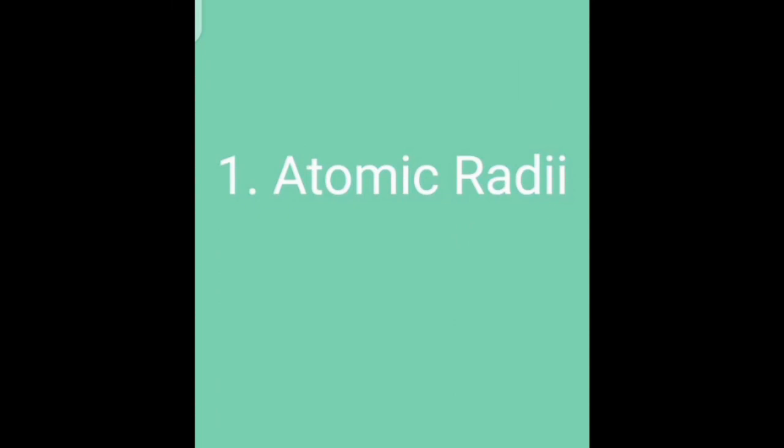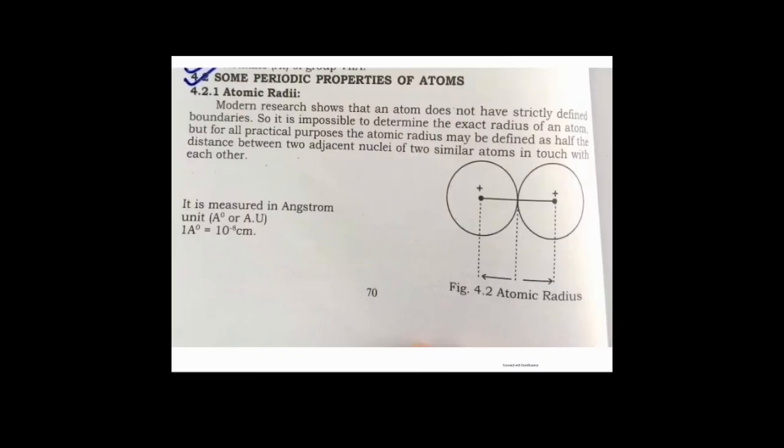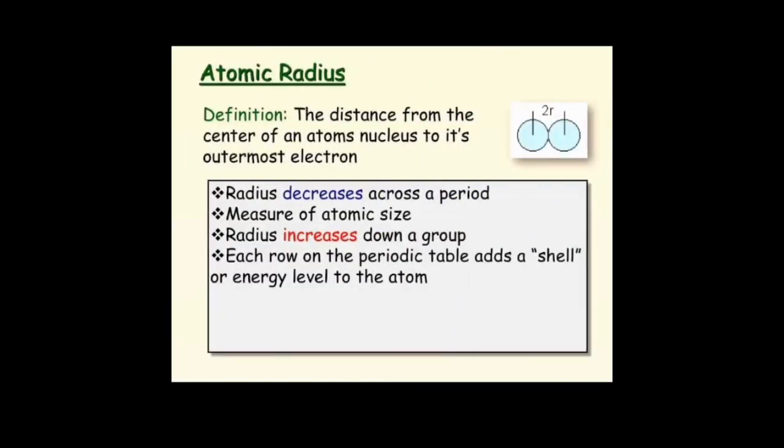What is atomic radii? Atomic radii is the distance between the two nuclei. We define it as the distance from the center of an atom's nucleus to its outermost electron, or the distance between the two nucleus of the atoms joined together.